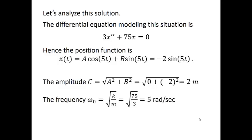The frequency omega naught is the square root of k divided by m. So in this case, the square root of 75 divided by 3 or 5 radians per second. And finally, the period T is 2 pi divided by the frequency. So in this example, 2 pi divided by 5 seconds.